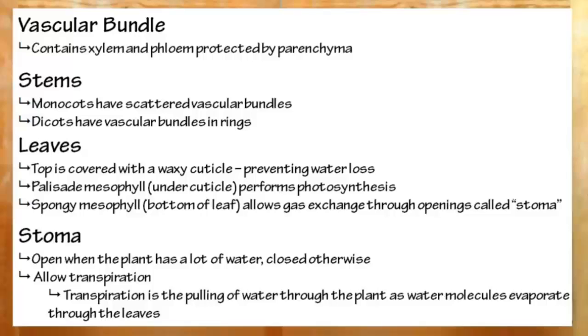In monocots, we get this kind of haphazard spreading of bundles of vascular tissue. Everything in between is cortex, remember. In dicots, we have vascular bundles spread around in a ring.